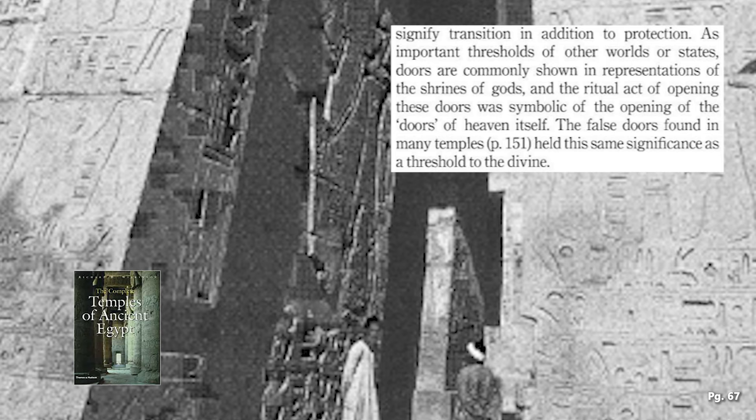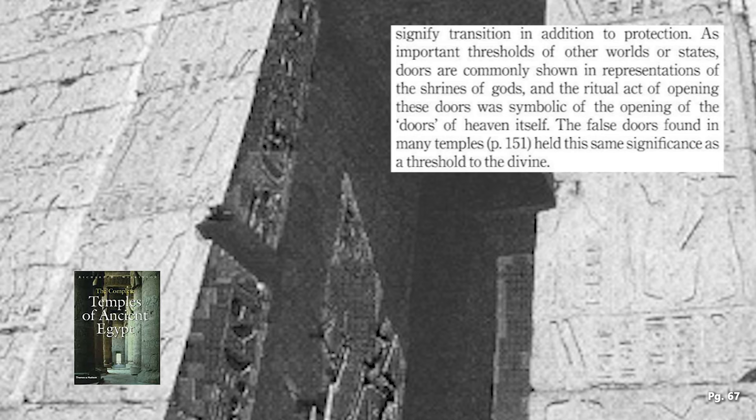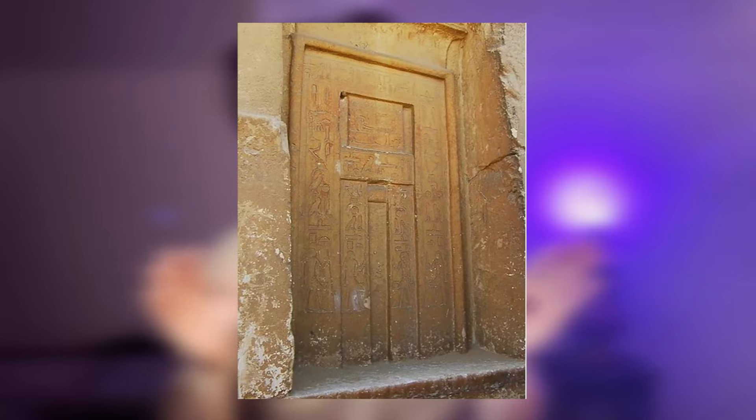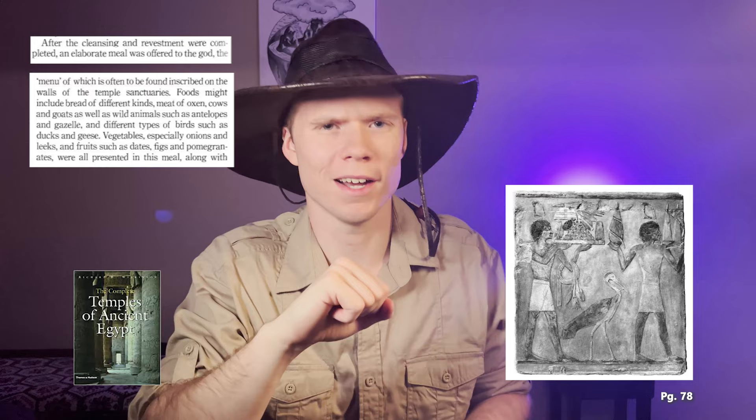This brings us to the doorway of the temple. The doors of the temple had significance as important thresholds of other worlds or states. Doors are commonly shown in representations of the shrines of gods, and the ritual act of opening these doors was symbolic of the opening of the doors of heaven itself. The false doors, on the other hand, found in many temples held the same significance as a threshold to the divine — these were doors that didn't open, seen as a way for gods to come into the divine realm; essentially a wall. We see something similar with the temple and tabernacle as places where God can be present, where the Israelites would be able to give back to God's divine presence they had been missing since the beginning in Eden. Wilkinson also notes that food was given to idols in the ancient Near East — actually given to feed the idols. While there was bread in the temple and tabernacle, the writers of the Bible never described the food as being food for God.